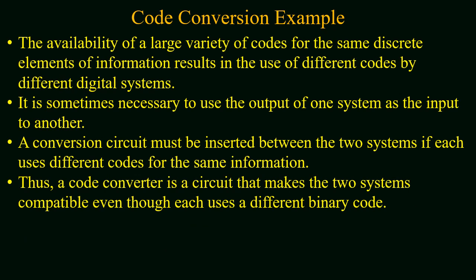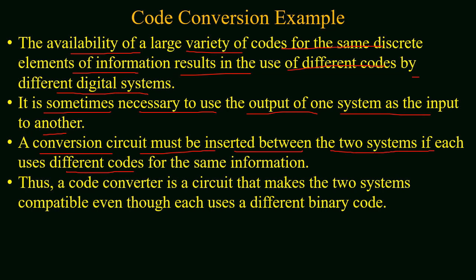As an example of the design of a combinational circuit we will study code converters. The availability of a large variety of codes for the same discrete element of information results in the use of different codes by different digital systems. It is necessary to use the output of one system as an input to another system, and here we require a code converter. A conversion circuit must be inserted between two systems if each uses different codes for the same piece of information. A code converter is a circuit that makes the two systems compatible even though each uses different binary codes.